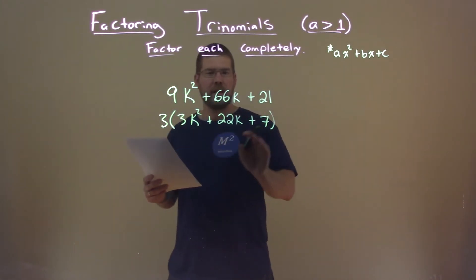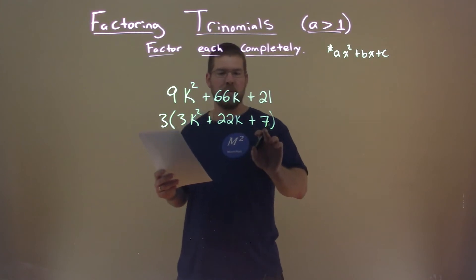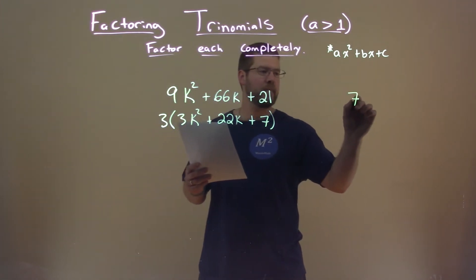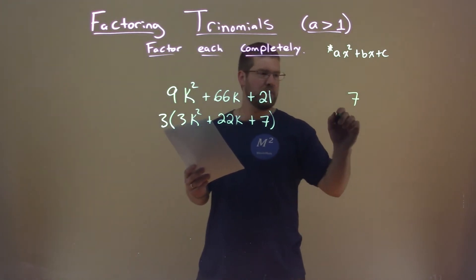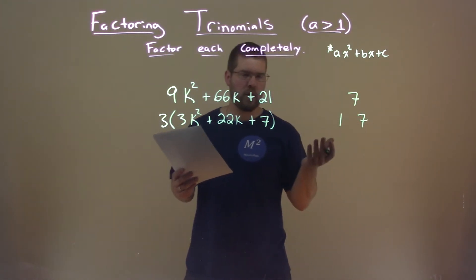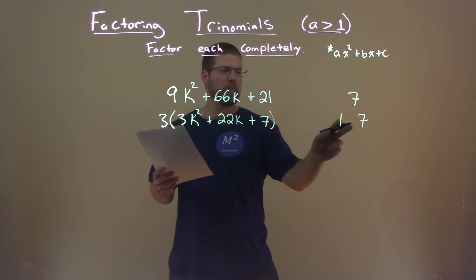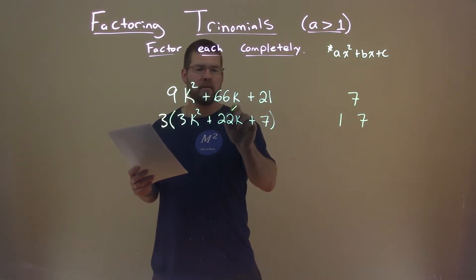I look at my c value, and again, this is all within the parentheses, and my c value is 7. What two numbers multiply to be 7? Well, that's just 1 and 7, or 7 and 1, it doesn't matter. They both will be positive because this b value is also positive.